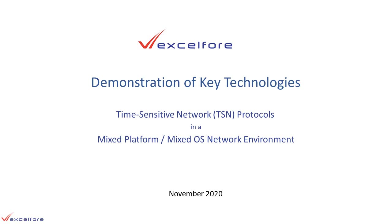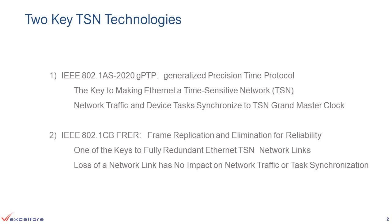This is a demonstration of key technologies in the XL4 time-sensitive network protocol stack. There are two key technologies that will be shown. First is GPTP, the Generalized Precision Time Protocol, which is the grand master clock that allows Ethernet to become a time-sensitive network. Second is FRER, Frame Replication and Elimination for Reliability, which is one of the key technologies for building a fully redundant TSN network.